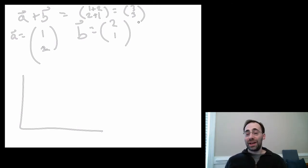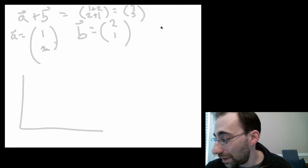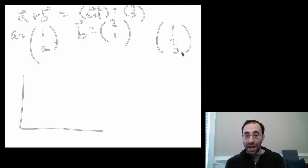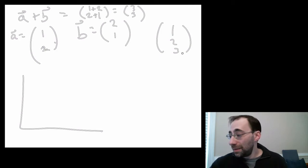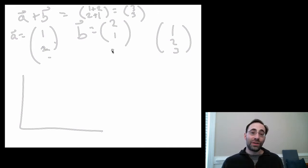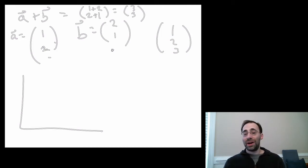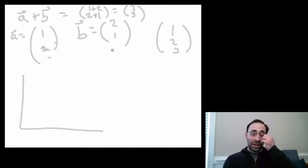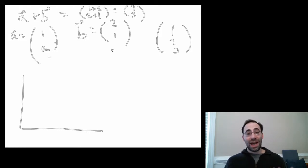You cannot add vectors that have different dimensions — different numbers of components — because you'd have elements left over with nothing to add to. You must have the same dimensional vectors when adding them, otherwise it's not defined. But if it is defined, if both vectors have the same number of elements, it's relatively straightforward: all you have to do is add each corresponding component. That's all there is to it.